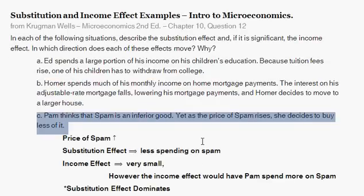Part C: Pam thinks that spam is an inferior good — spam being the fake or quasi-meat product. Yet as the price of spam rises, she decides to buy less of it. The price of spam rises, so the substitution effect is less spending on spam. As spam becomes more expensive, Pam will reduce her consumption of it and substitute other alternatives to this meat substitute. The substitution effect is having her spend less on spam.